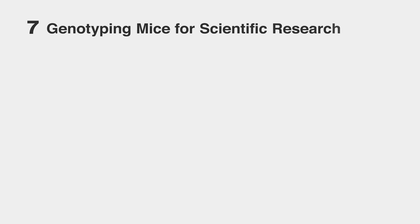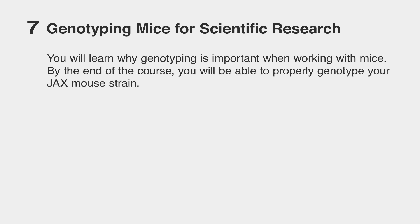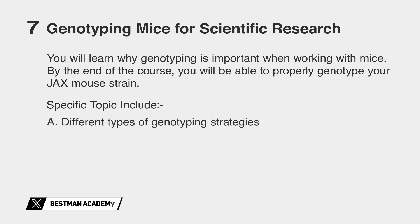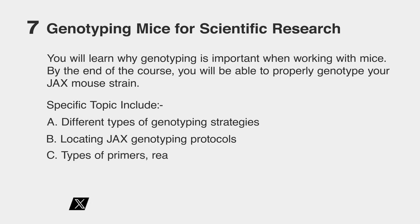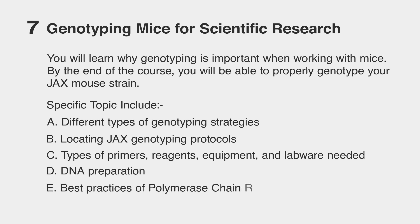Number seven: genotyping mice for scientific research. In this course, you will learn why genotyping is important when working with mice, and by the end you will be able to properly genotype your mouse strain. Topics include different types of genotyping strategies, locating the genotyping protocols provided by the Jackson Laboratories, types of primers, reagents, and equipment needed, and the basics of DNA preparation and best practices when using PCR for genotyping.